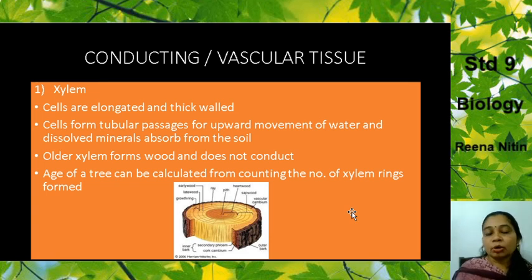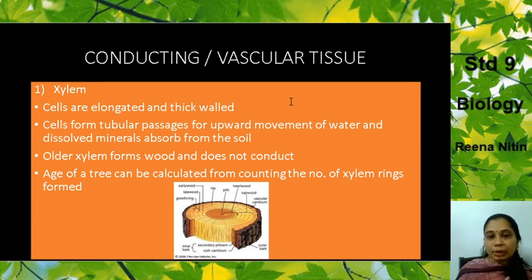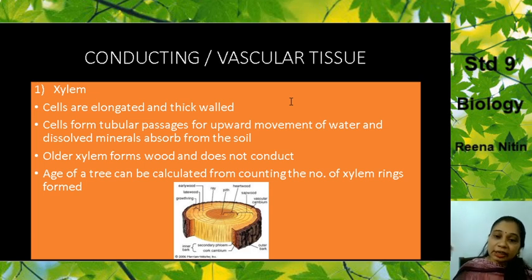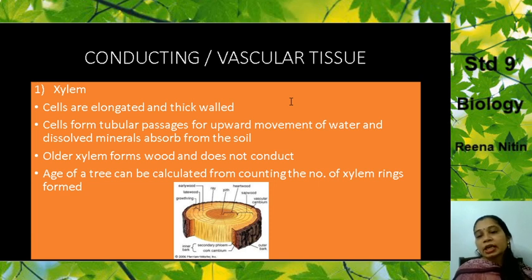Now we come to the third type of tissue — the conducting tissue. As the name suggests, conducting means to pass something from one place to another. Why do plants need a conducting system? Plants make food with the help of water, sunlight, and carbon dioxide. The water has to reach from the soil to the leaf, which is the kitchen of the plant. So there should be a system to carry that water — known as the conducting system or the xylem.